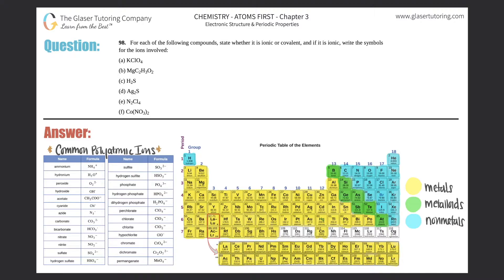Number 98: for each of the following compounds, state whether it is ionic or covalent, and if it is ionic, write the symbols for the ions involved. This one is going to be jam-packed with new information. Remember that ionic compounds are always going to be a metal plus a non-metal — that's one type. The other exception is if you have two polyatomic ions coming together.